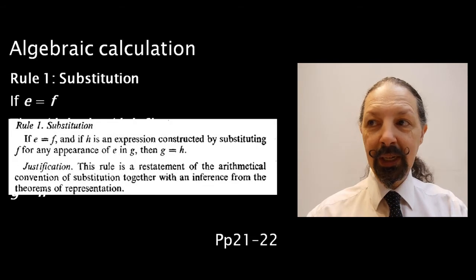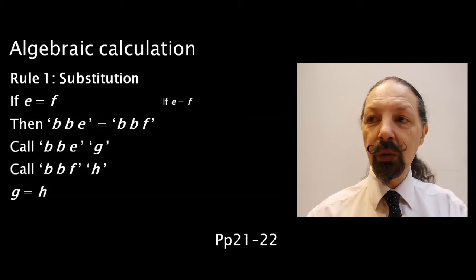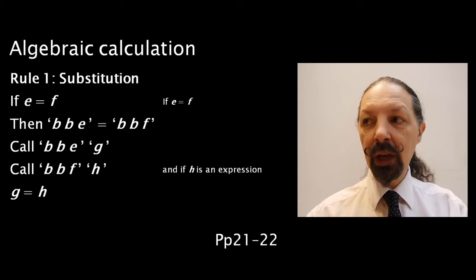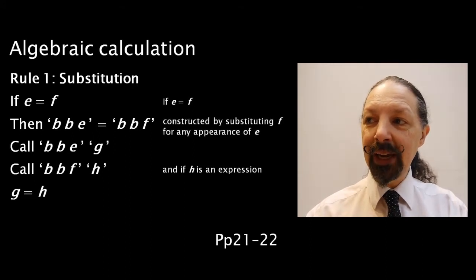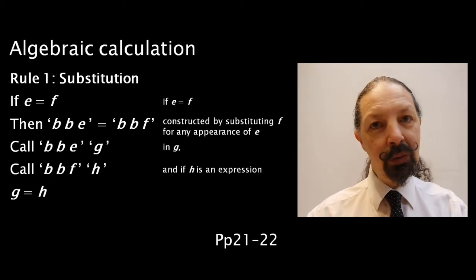Here's Spencer Brown's wording, and here's how it compares with mine. If E equals F, and if H is an expression constructed by substituting F for any appearance of E in G, then G equals H.